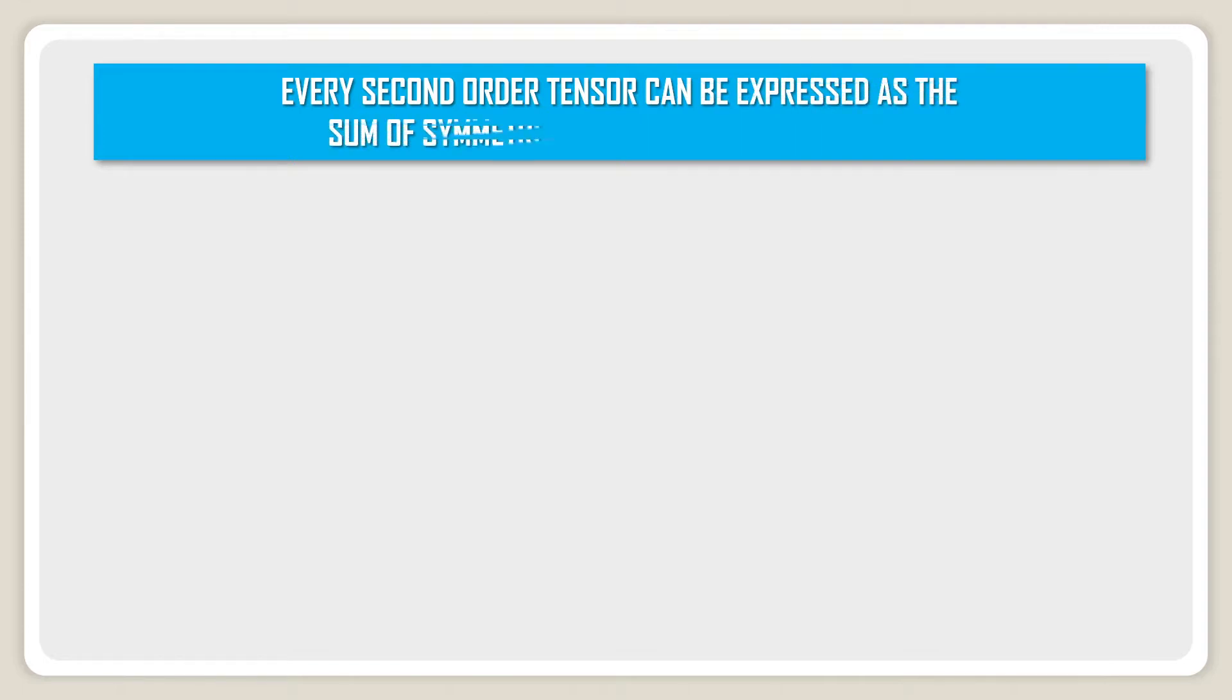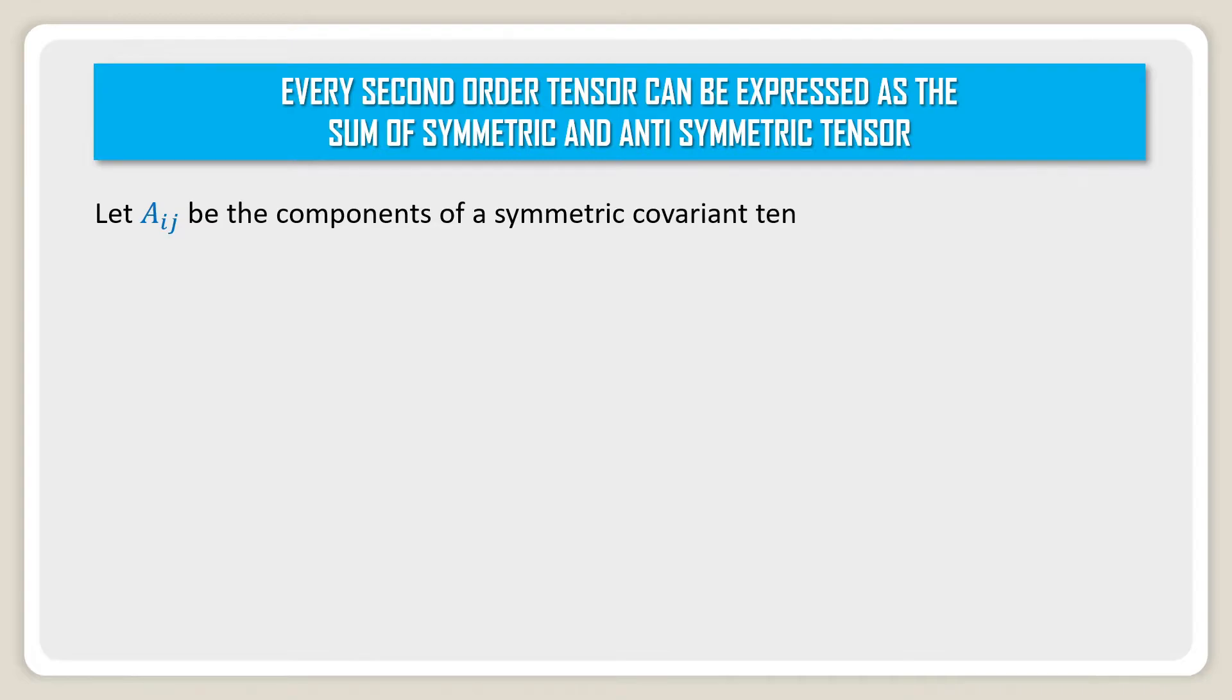Every second order tensor can be expressed as the sum of symmetric and anti-symmetric tensor. Let Aij be the components of a covariant tensor of rank 2 in Xi system.